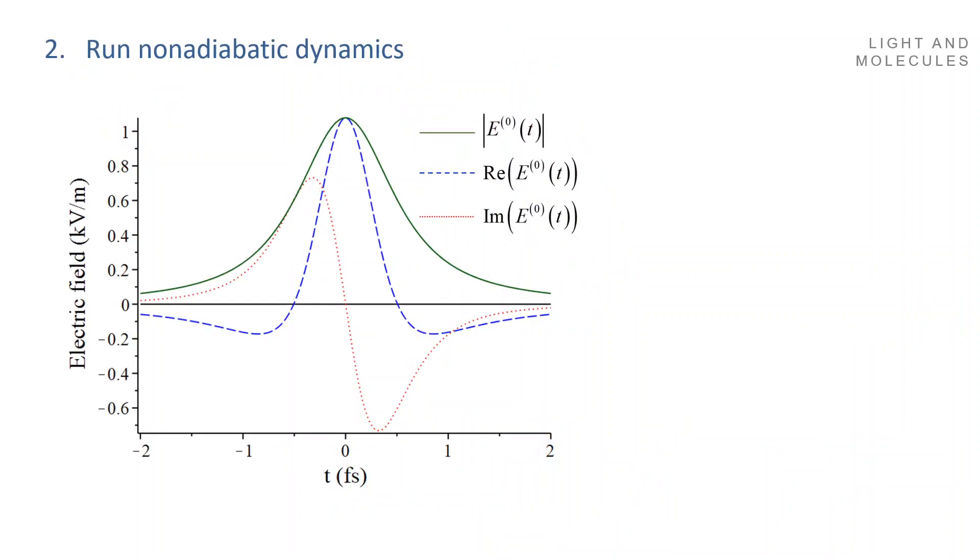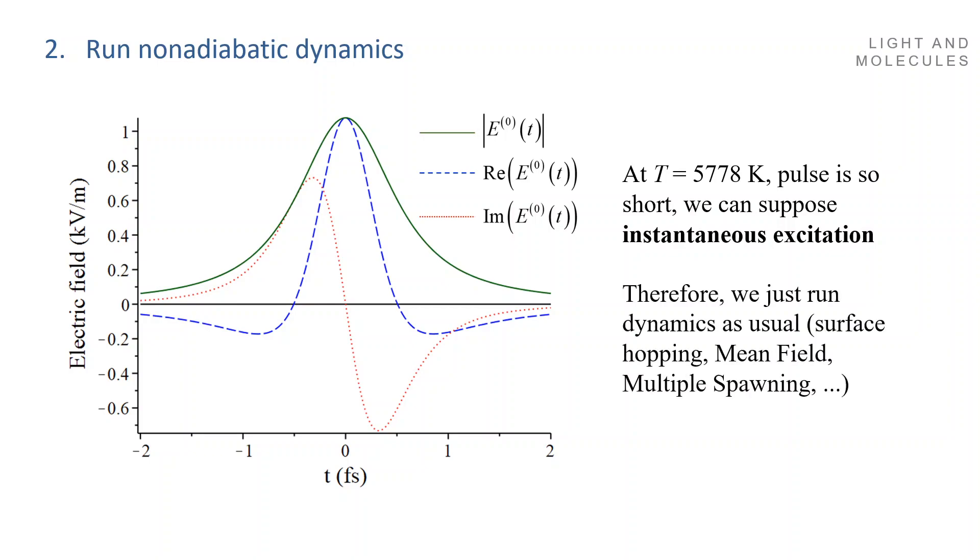Step 2 in the dynamics is to run the dynamics itself. That's the pulse from solar radiation in the Chenau-Brumer approach, just a few femtoseconds. So it's extremely fast. In these 4 or 5 femtoseconds that have a duration of the pulse, the molecule won't move, won't change the nuclear position. Which means that you can just suppose that you have an instantaneous excitation, as usual when I do for instance surface hopping. And then, because we have this instantaneous excitation, you can just run dynamics as usual. You can do surface hopping, mean field, Ehrenfest, you can do multiple spawning, whatever. You don't need to change anything in the dynamics. You have just to take care that the initial conditions are given by the black body radiation.